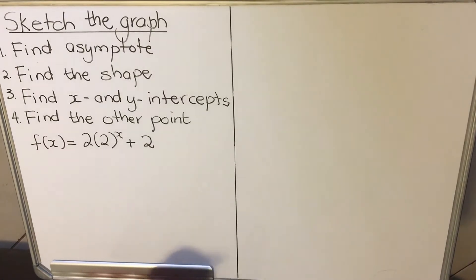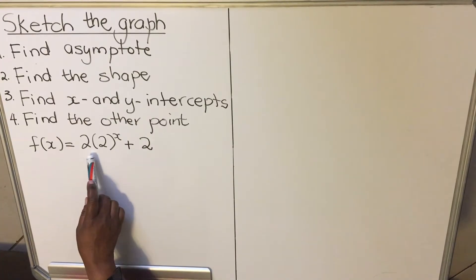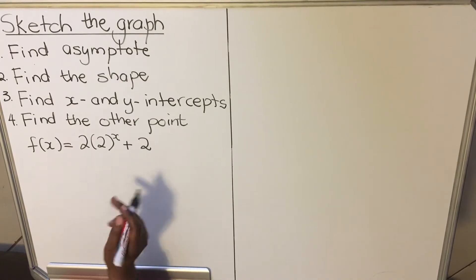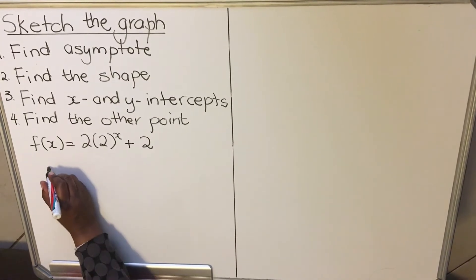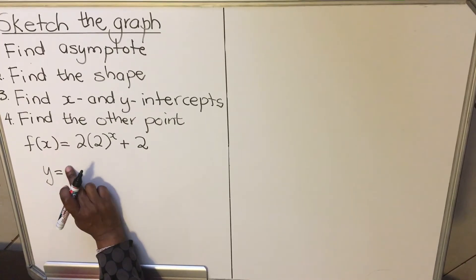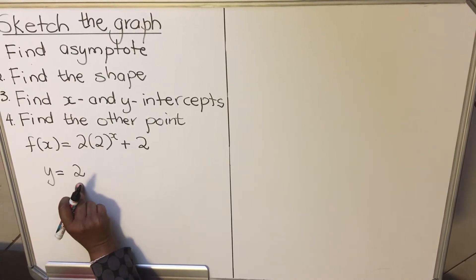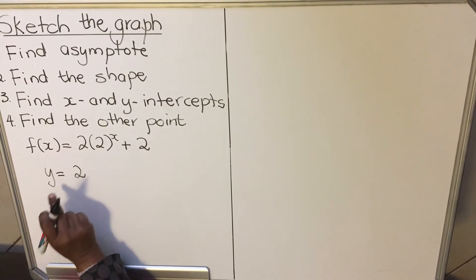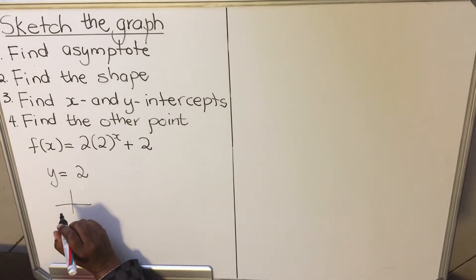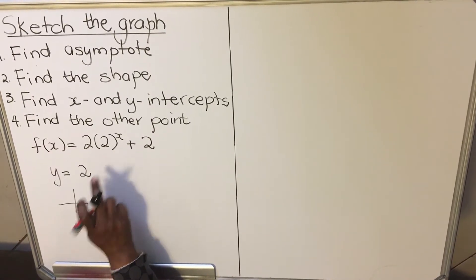The example given is f(x) = 2·2^x + 2. Step 1: find the asymptote. The asymptote is y = Q, and my Q is 2, so the asymptote is y = 2. Step 2: find the shape. My a is positive and my B is a whole number greater than 1, so my graph will look like this — rising away from the asymptote in the first quadrant.